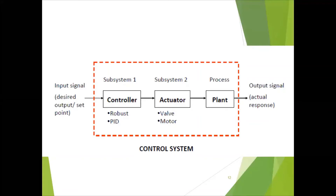The actuator is some mechanism connecting the combustion chamber to the wheel. The process or plant is of course the bike itself — the bike is the system to which you are applying control. Once you reach the destination, that is your actual response. While reaching the destination, whatever different control strategies you apply constitute the actual response — for example, if you encounter a traffic signal, you need to apply the brake and reduce the accelerator.